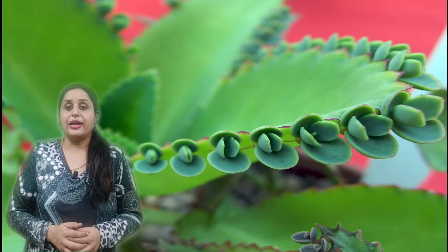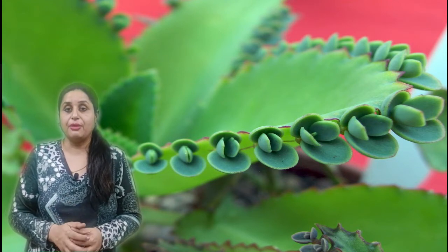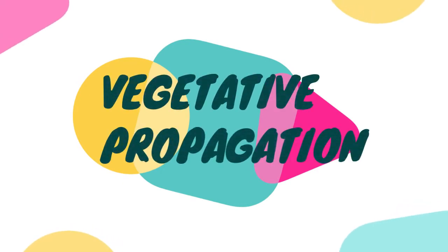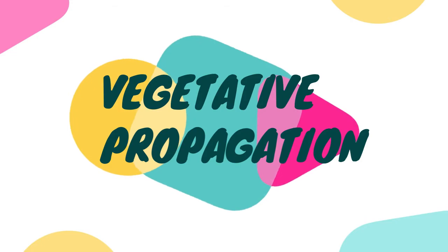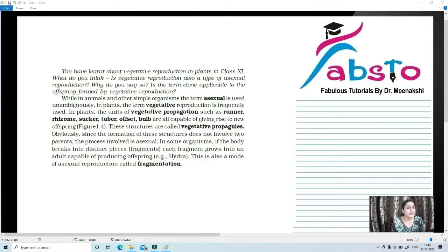So we are going to learn about vegetative propagation. You have learnt about vegetative reproduction in class plus one. Is vegetative reproduction also a type of asexual reproduction? Yes.